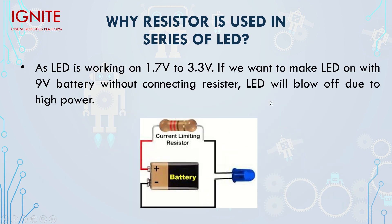This is the reason we use a resistor in series. Since the LED works on 1.7 to 3.3 volts, if you connect it directly to a 9-volt battery without a resistor, the LED will blow off because it cannot handle that much current. The resistor opposes the excess electrons so only a limited amount of current flows through the LED, and the LED will not blow off — it will only glow and give us a light effect.